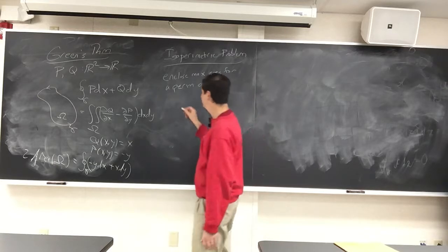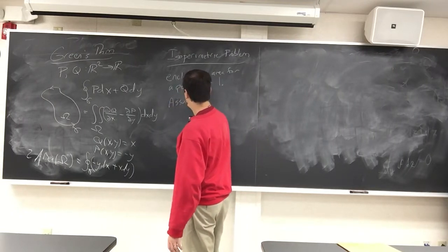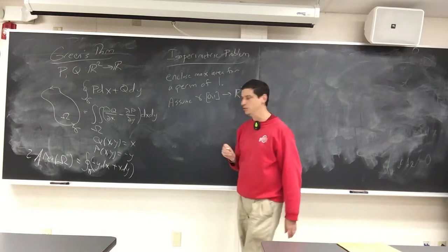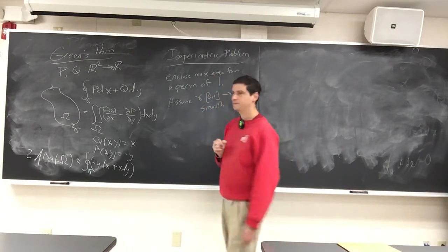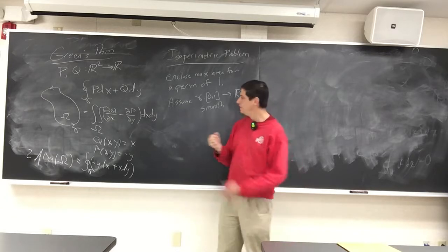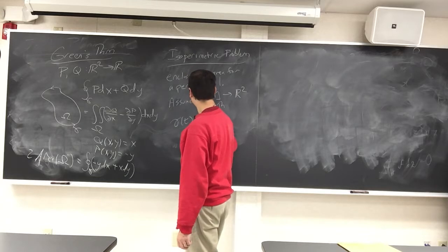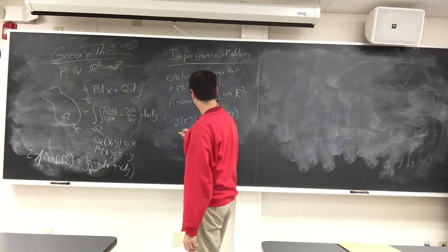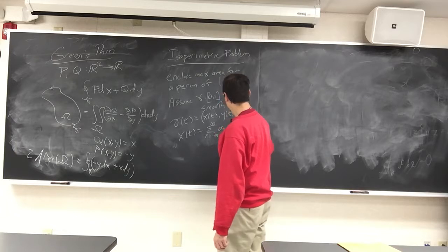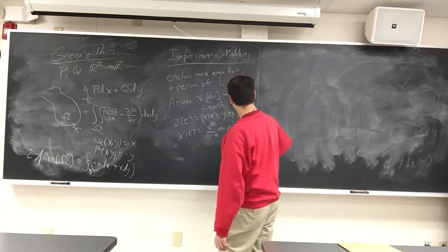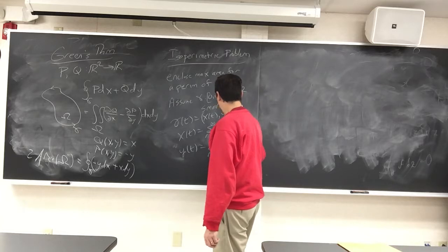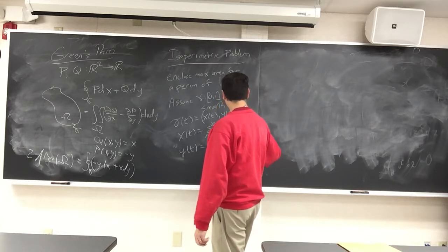We assume gamma goes from [0,1] to R², and it's smooth. We write gamma(t) = (x(t), y(t)), where x(t) = Σ aₙ e^{2πint} and y(t) = Σ bₙ e^{2πint}, with n ranging from −∞ to ∞. This allows us to represent the curve as a Fourier series.